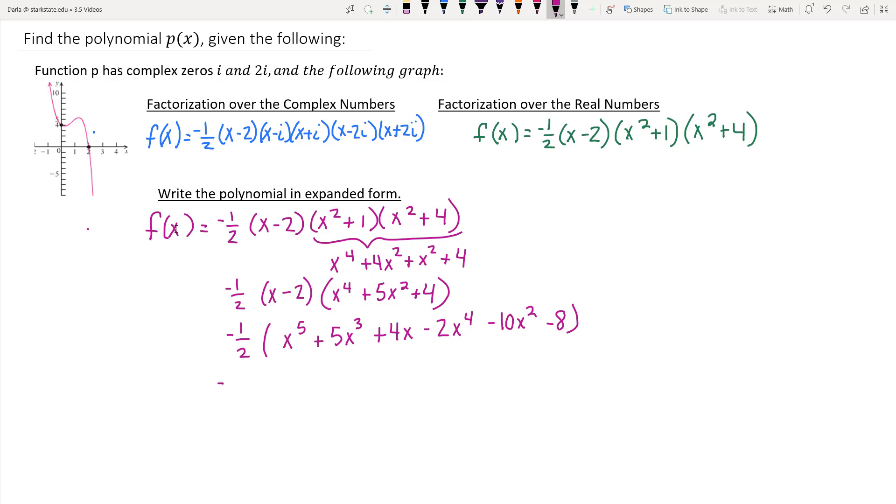in expanded form, I just need to distribute that negative half across on every term. And so this is negative 1 half x to the fifth. Well, I guess I shouldn't say plus, because I'm going to take negative 1 half times 5. So that'll be negative 5 halves x to the third.